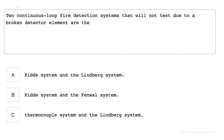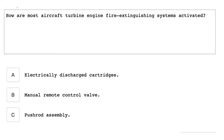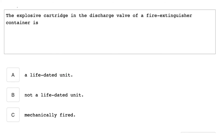Two continuous loop fire detection systems that will not test due to a broken detector element are the Kidde system and the Fenwall system. How are most aircraft turbine engine fire extinguishing systems activated? Electrically, by discharge cartridge. The explosive cartridge in a discharge valve of a fire extinguisher container is a life-dated unit.